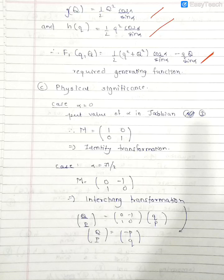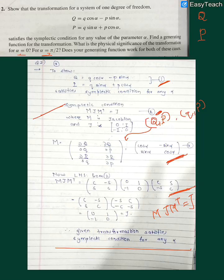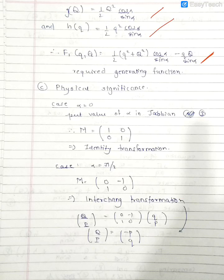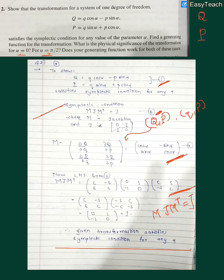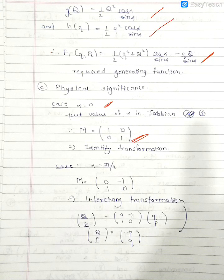Now let's come to the next question which asks us what are the significance of such transformation as mentioned by equation 1 if our alpha is zero. We put the value of alpha in this generating function and find the Jacobian. When we put alpha equals zero, for cos we get 1 and for sin we get 0. This is a kind of identity transformation.